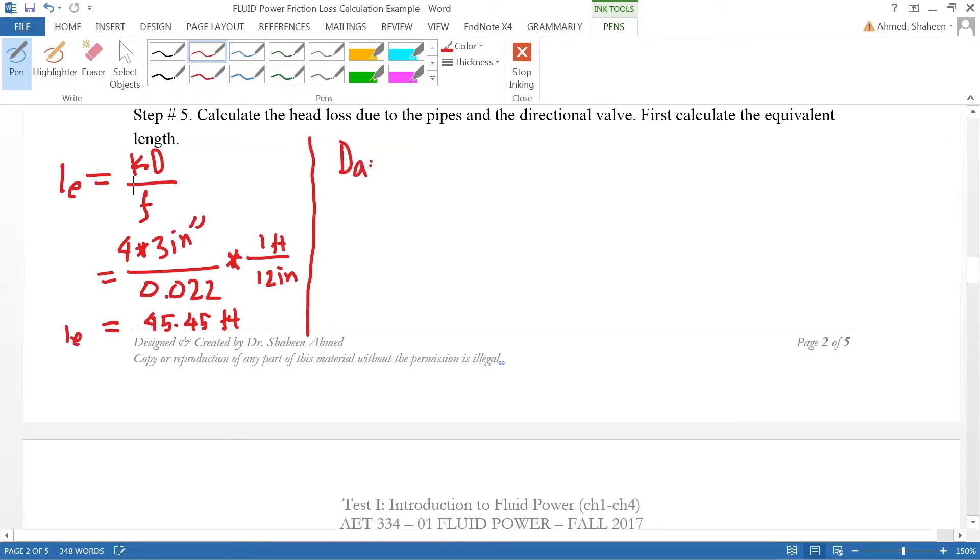to calculate the friction losses. Darcy's equation is the friction loss calculation equation: f times L over D times V squared over 2g. Inputting all these values, f is 0